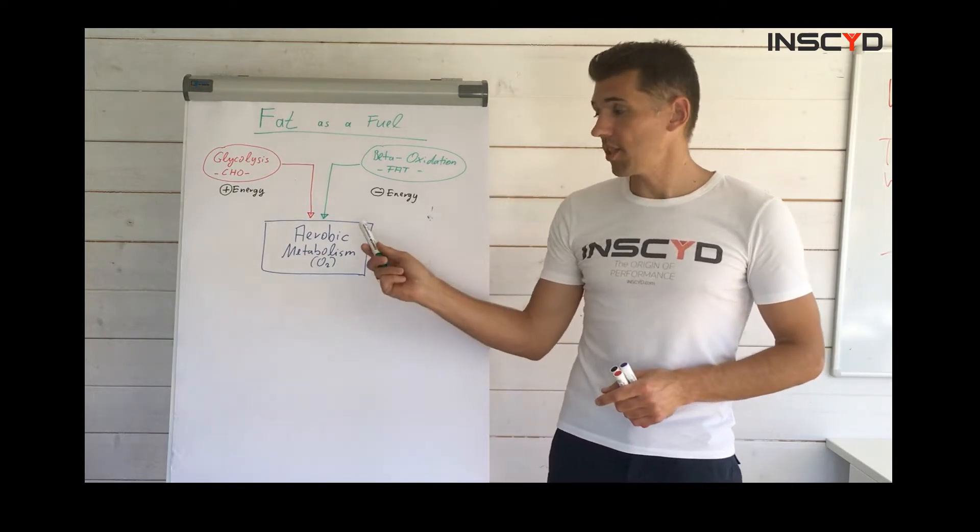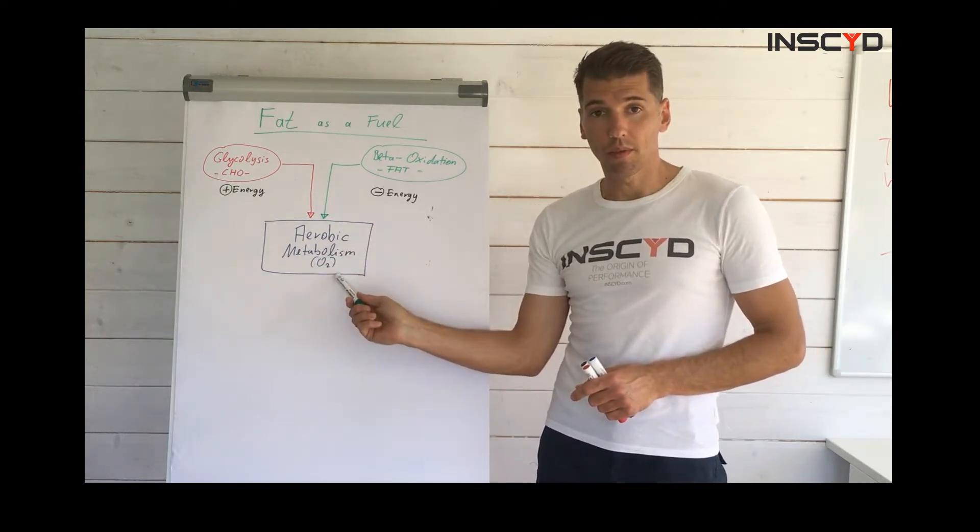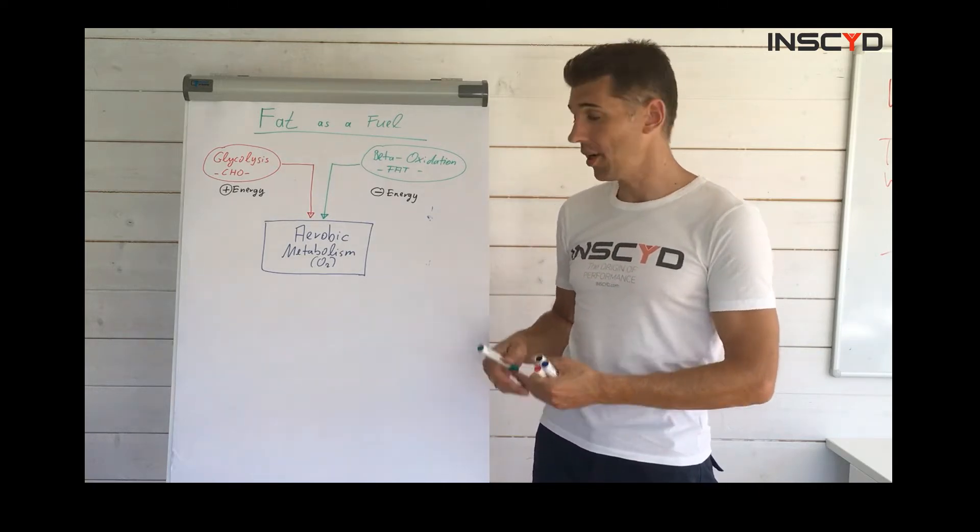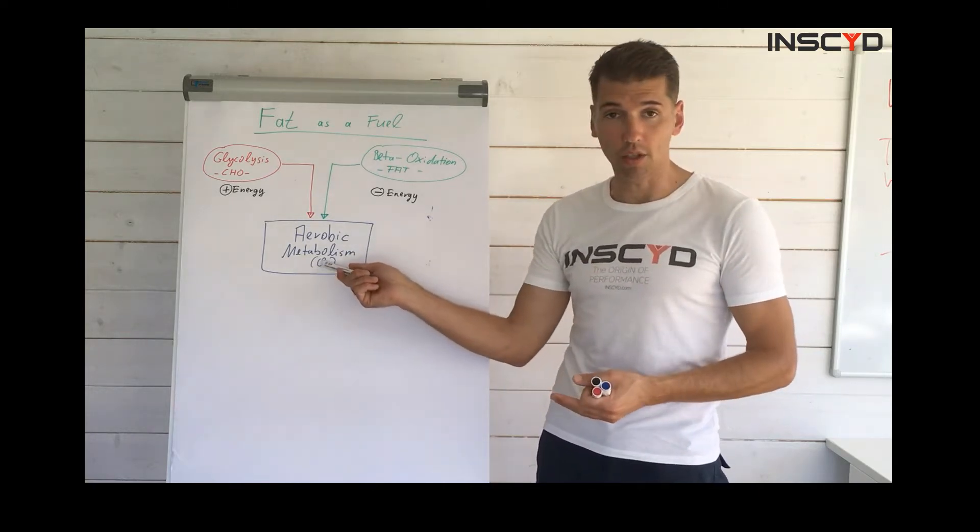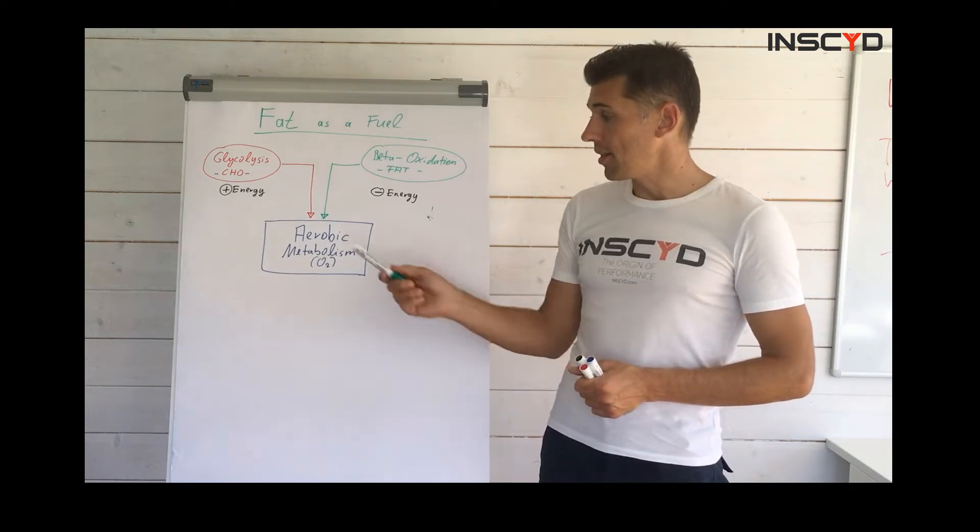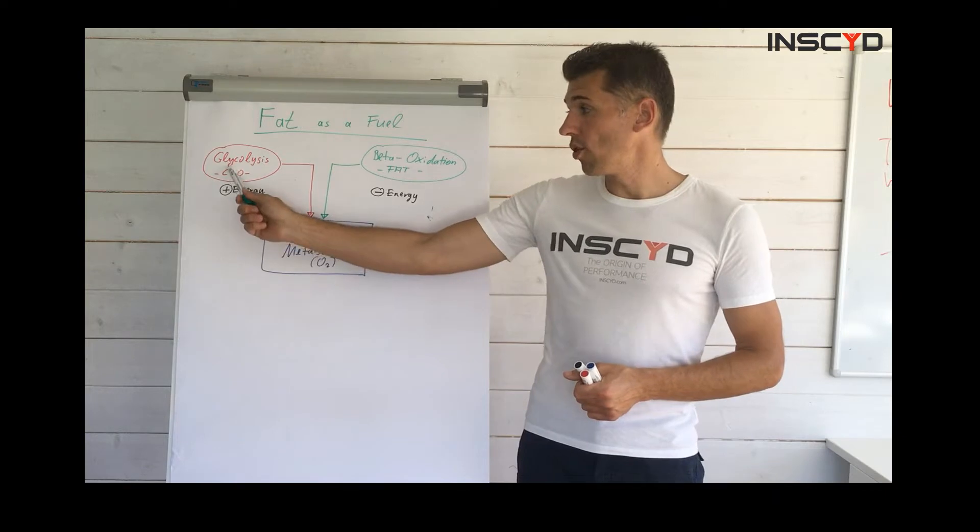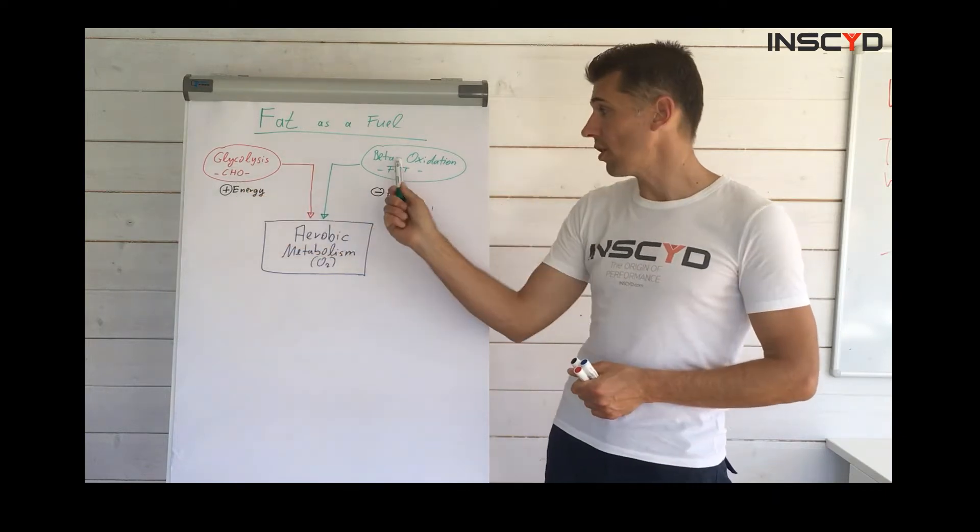So, we want to start with the aerobic metabolism. This is, so to speak, your engine that burns the fuel in order to produce energy, right? Aerobic metabolism using oxygen, obviously. And this engine can get its fuel from two sources. One source is carbohydrate, and one source is fat.